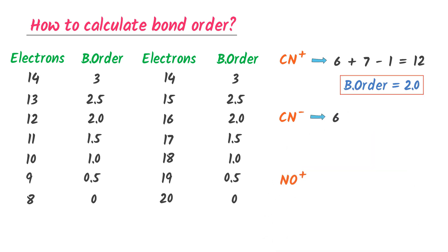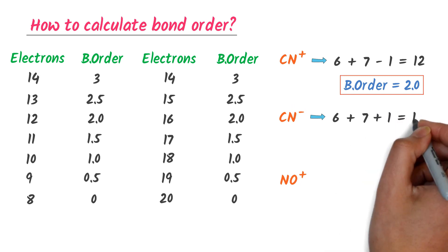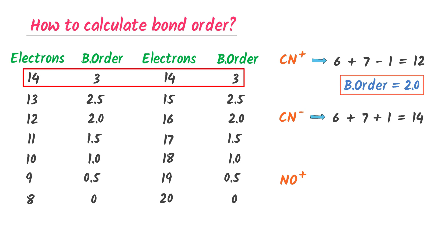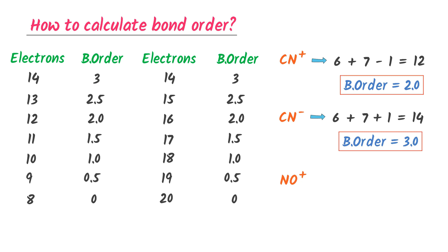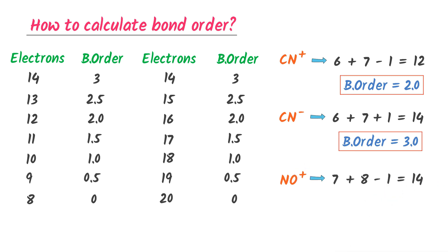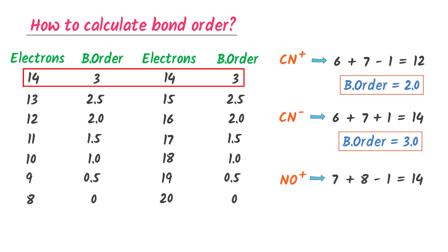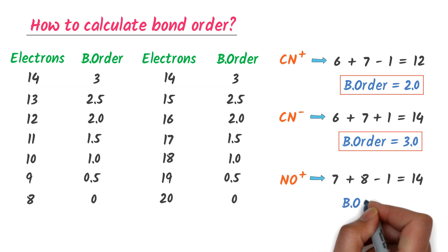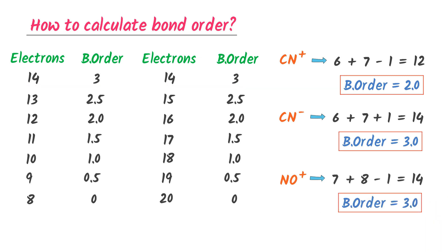Secondly, there are 6 electrons in carbon plus 7 electrons in nitrogen. I change the sign of this negative one to positive one. I get 14 electrons. When there are 14 electrons, the bond order is 3.0. So the bond order of this ion is 3.0. Hence, we can easily calculate the bond order of ions using this trick.